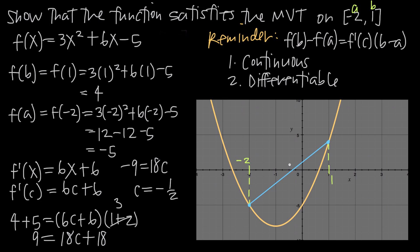So c = -1/2 is this value right here on the graph. If we come down from x = -1/2 until we meet the function, that point is our point of tangency. You can see that a tangent line drawn through this point is roughly parallel to the secant line we drew originally, intersecting the graph at only this one point.